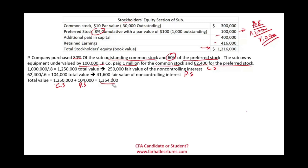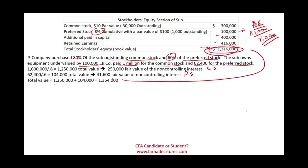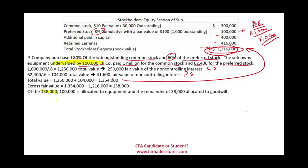This is the total fair value of the company. The book value is $1,216,000. We compare fair value to book value: the difference is $138,000. The problem states the company has equipment undervalued by $100,000, so we allocate $100,000 to equipment and the remaining $38,000 goes to goodwill.